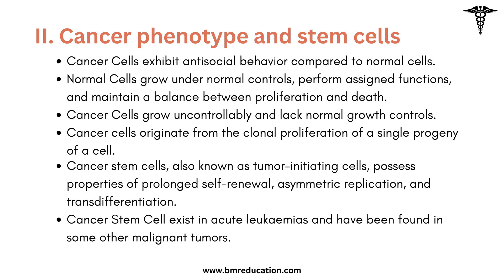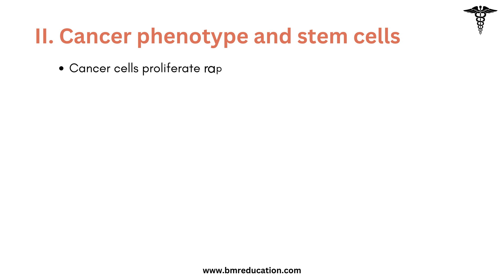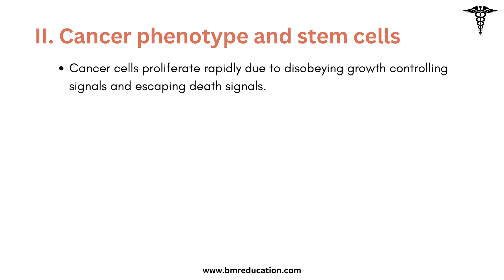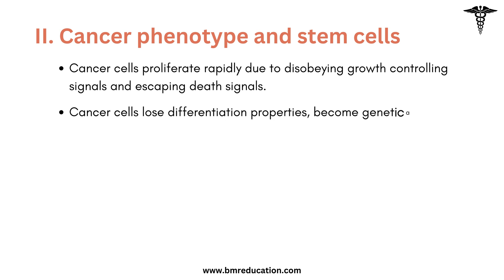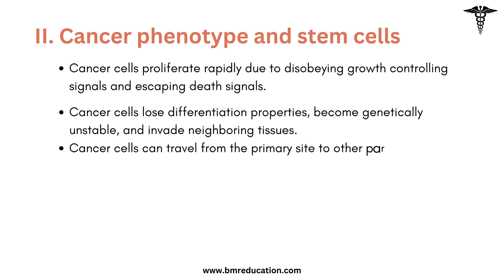Compared to normal cells, cancer cells exhibit antisocial behavior as follows: cancer cells proliferate rapidly due to disobeying growth-controlling signals and escaping death signals. Cancer cells lose differentiation properties, become genetically unstable, and invade neighboring tissues. Cancer cells can also travel from the primary site to other parts of the body, forming distant metastases.